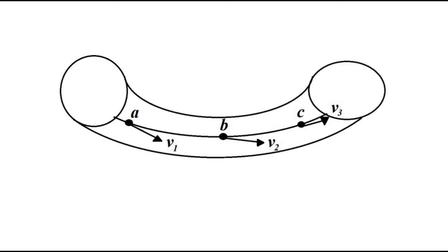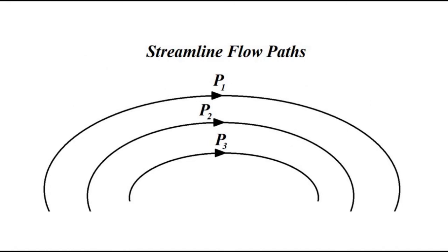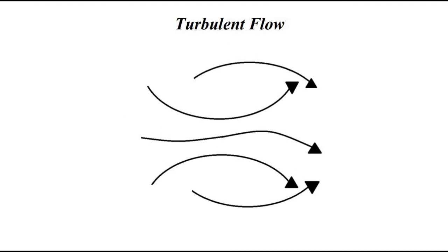Turbulent flow is basically the opposite of streamline or steady flow. It is completely disorganized, not well defined, with different velocities at different points in different directions. Where streamline flow is well defined with fixed velocities at each point, turbulent flow is disorganized and random in nature.